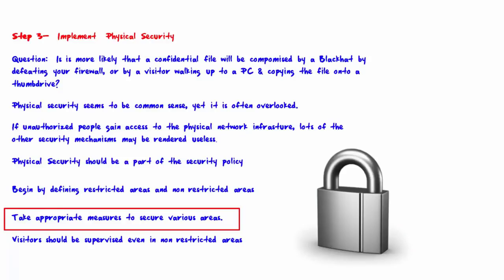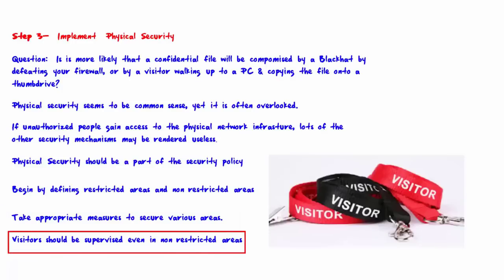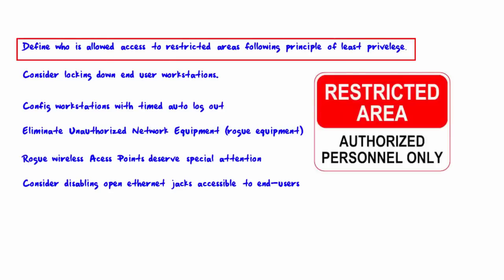Take appropriate measures to secure all areas — consider human security guards, various kinds of locks, biometrics, key cards, cameras, etc. Visitors should be supervised even when in non-restricted areas. Define who is allowed into restricted areas by following the principle of least privilege: only employees with a legitimate business reason should have access.